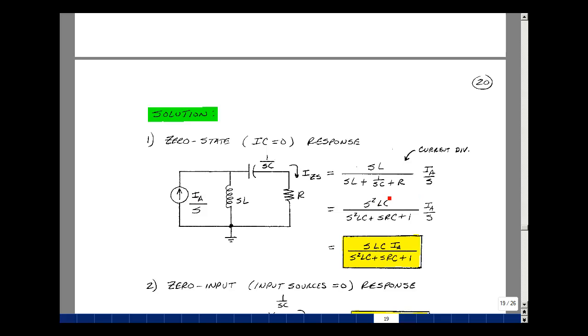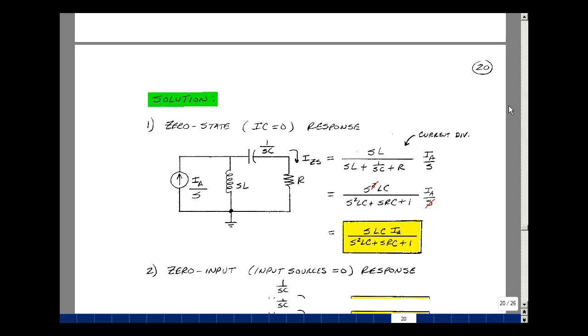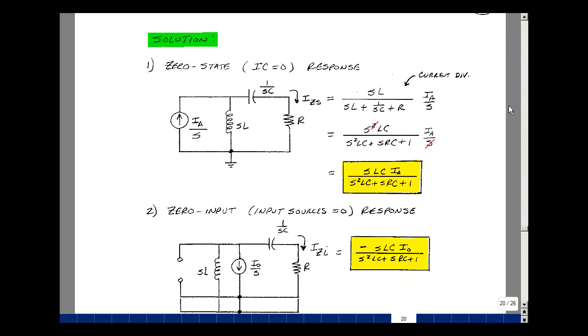We can clean this up a little bit. You can multiply the numerator and denominator by sC, so I'm going to get an s squared LC, s squared LC, a 1, and an srC, and then times i sub a over s, and then one of these s's will cancel with this. We're left with s times LC times just a constant i sub a, over s squared LC plus srC plus 1.